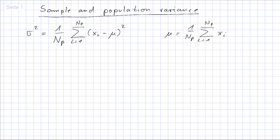In this video we will take a look at the differences between sample and population variance. To compute the variance of a population, sigma squared, we take the sum over all squared deviations of each data point from the population mean mu — so (xᵢ - μ)² — divided by the number of population members Nₚ. Here mu is the mean population value: the sum over all population members divided by the population size Nₚ.